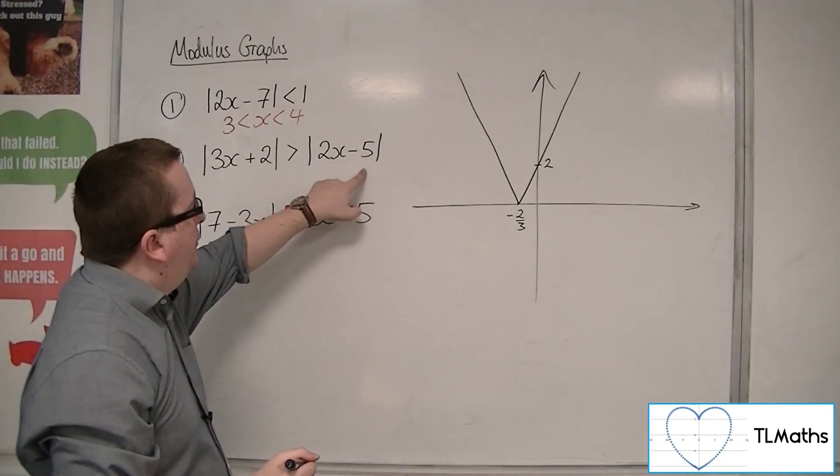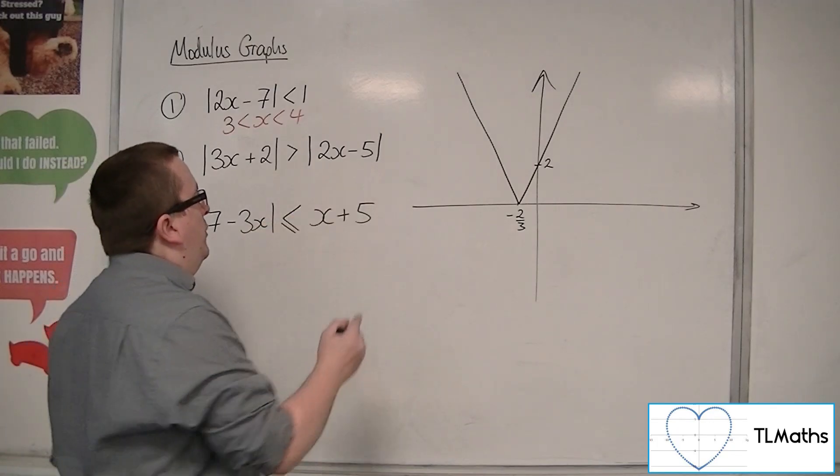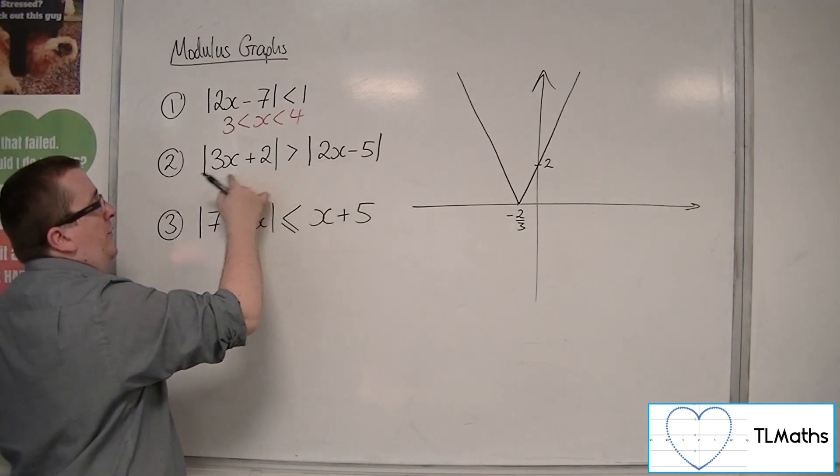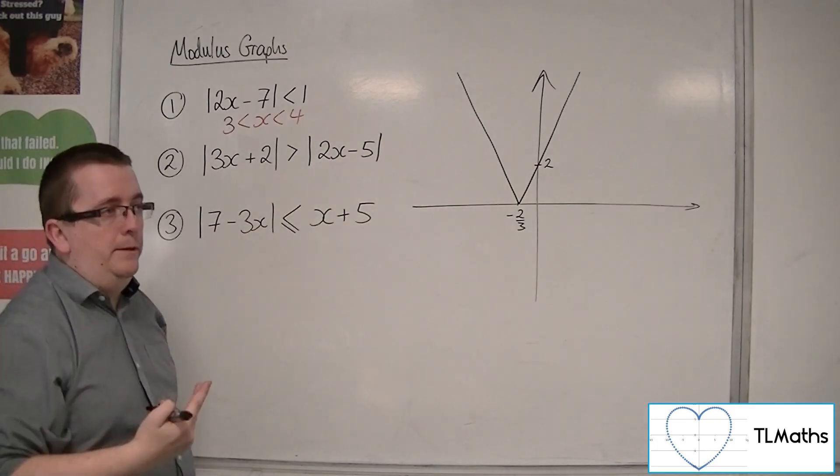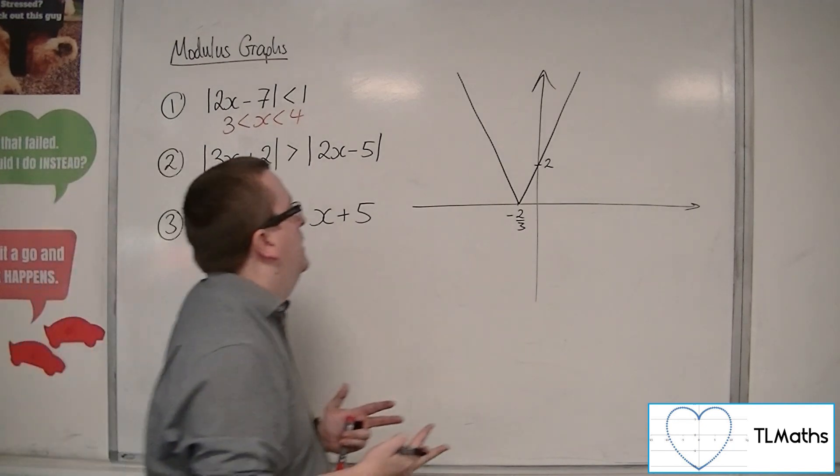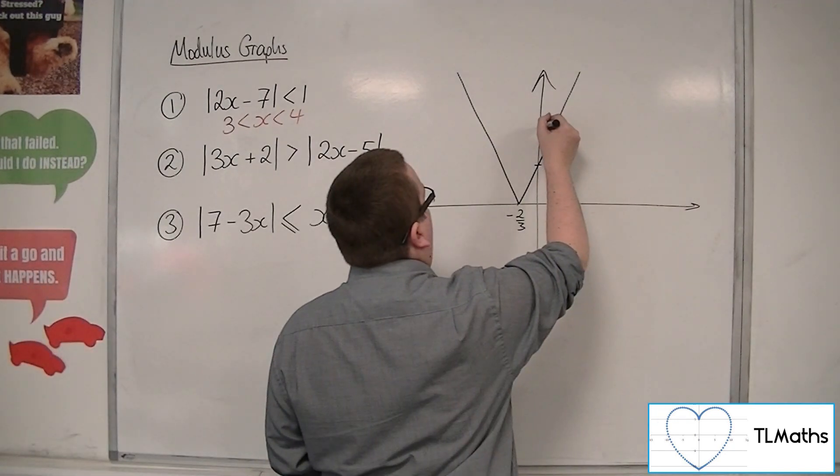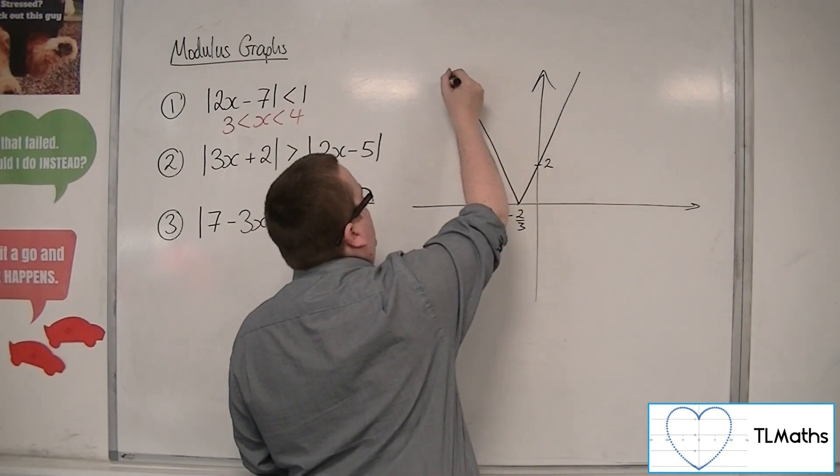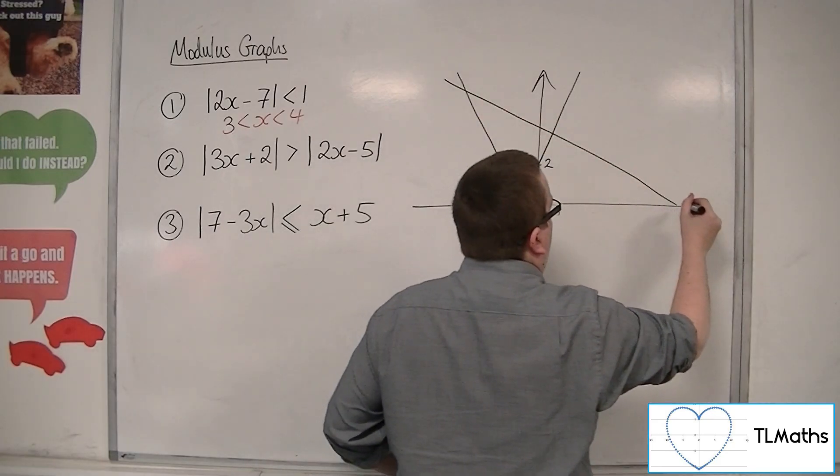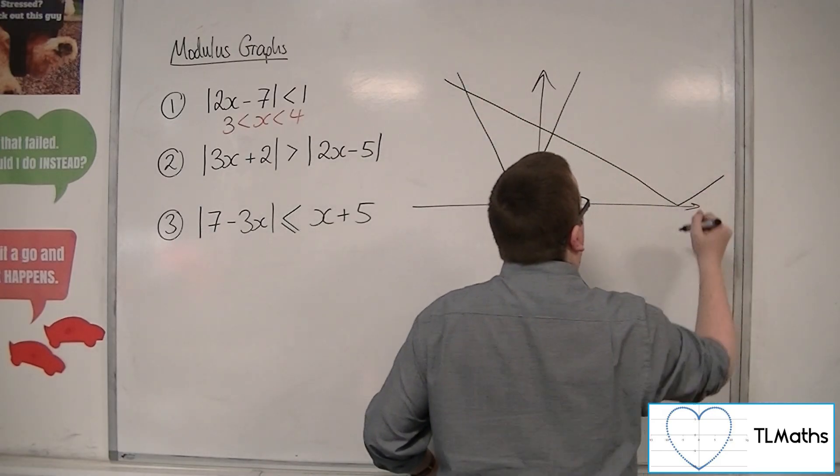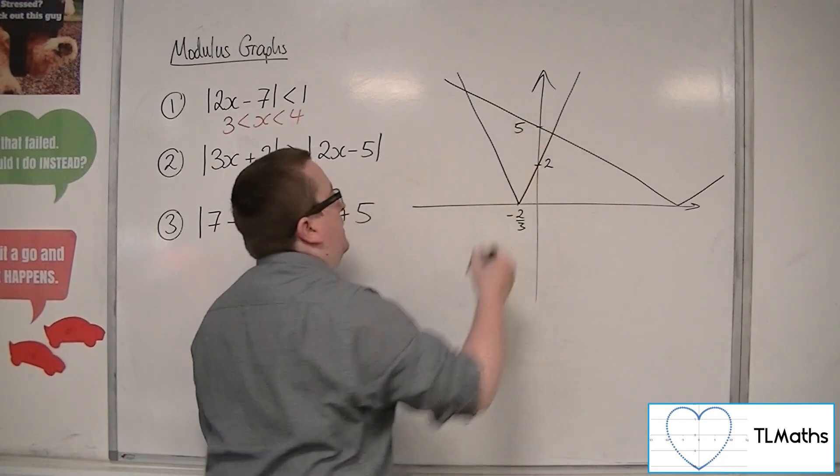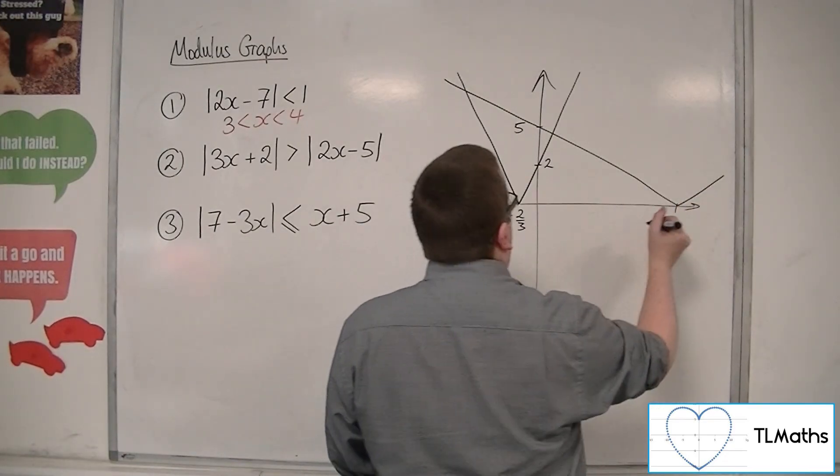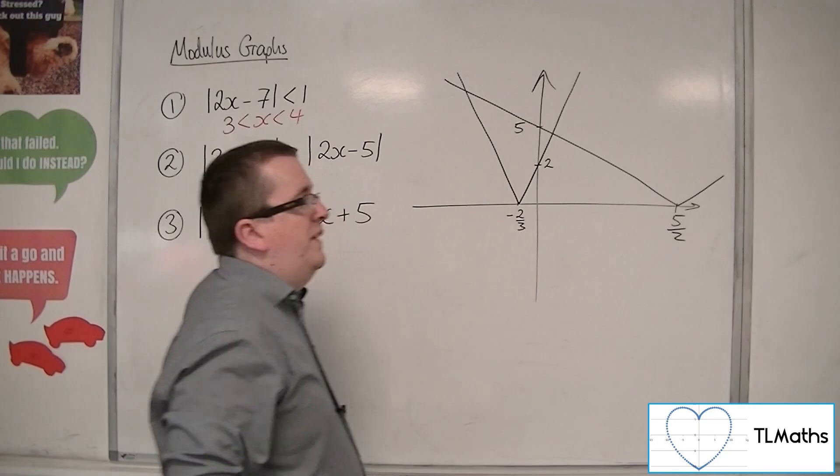Now, 2x minus 5 modded. Because the gradient, the number in front of the x, the coefficient, is less than that one, this means this one will be shallower. Okay, it won't be as steep. So, 2x minus 5 would be going through 5 on the y-axis and be coming through at a lesser degree. So, my graph is not going to be perfect. It looks something like that. Going through 5 on the y-axis and going through 5 halves on the x-axis.